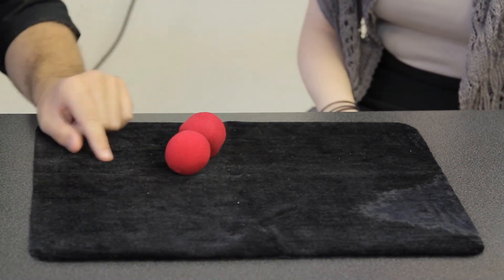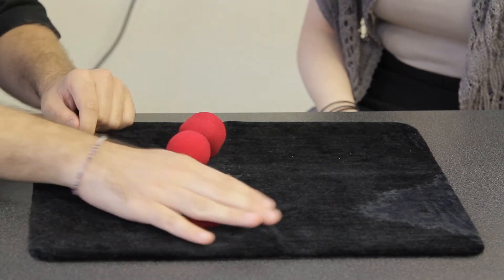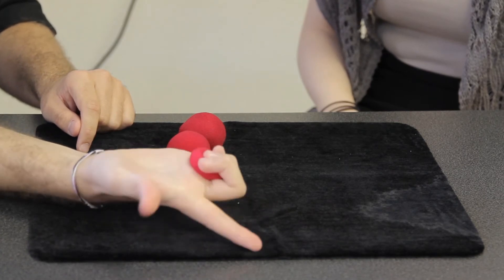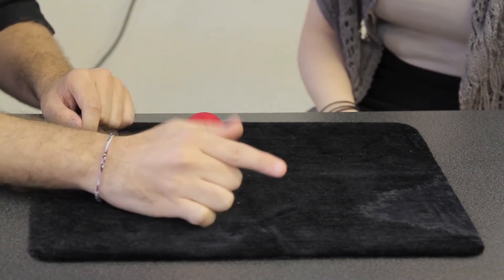We're going to start. We're going to have our two sponge balls on our table and we're going to have a secret sponge ball hidden in our hand, just like this. I like to hide it under my three fingers just like this.